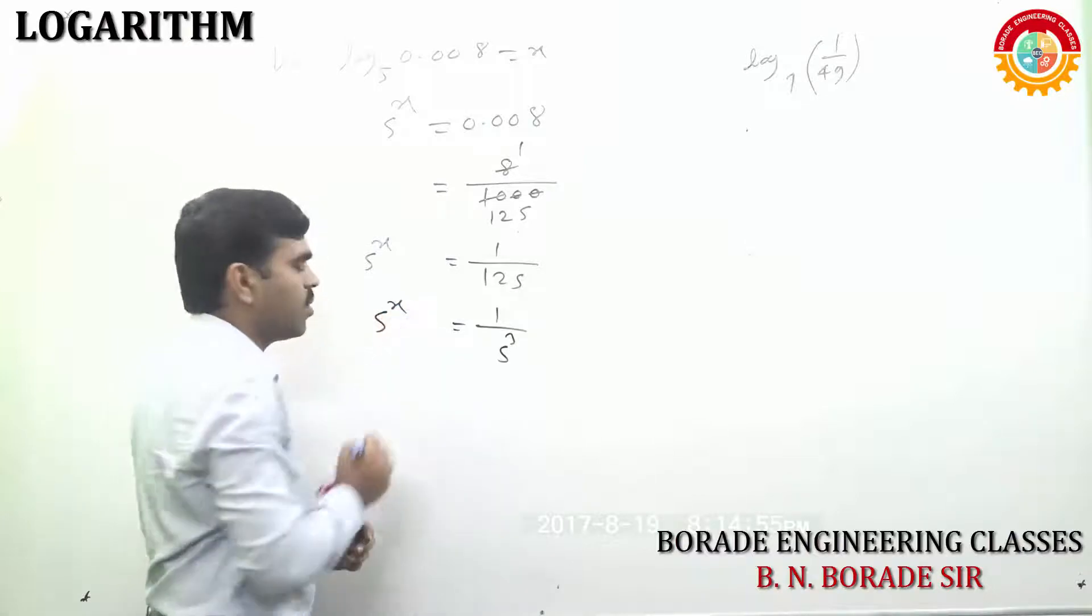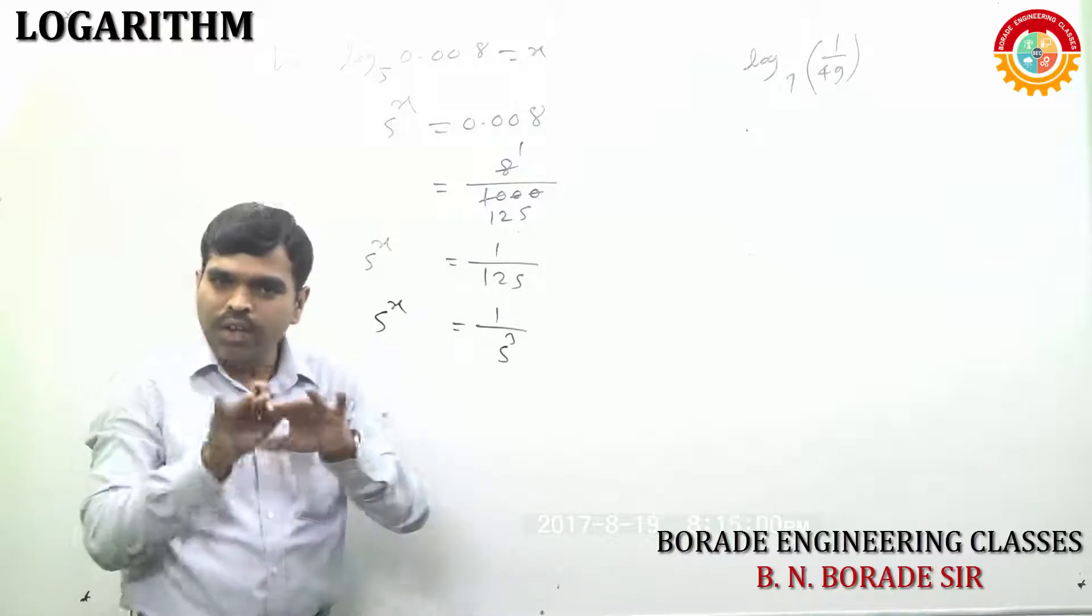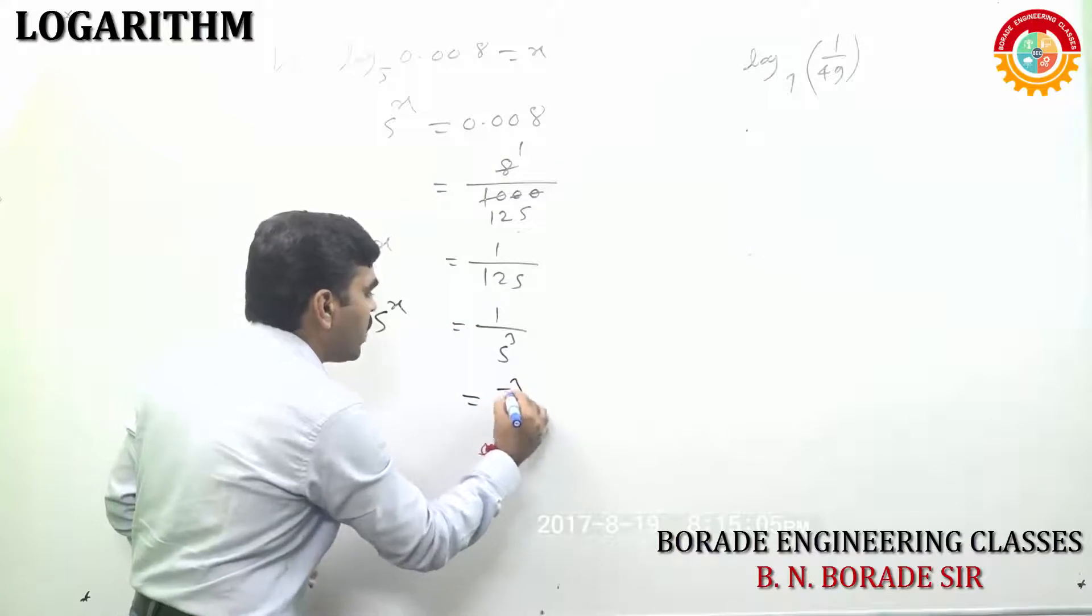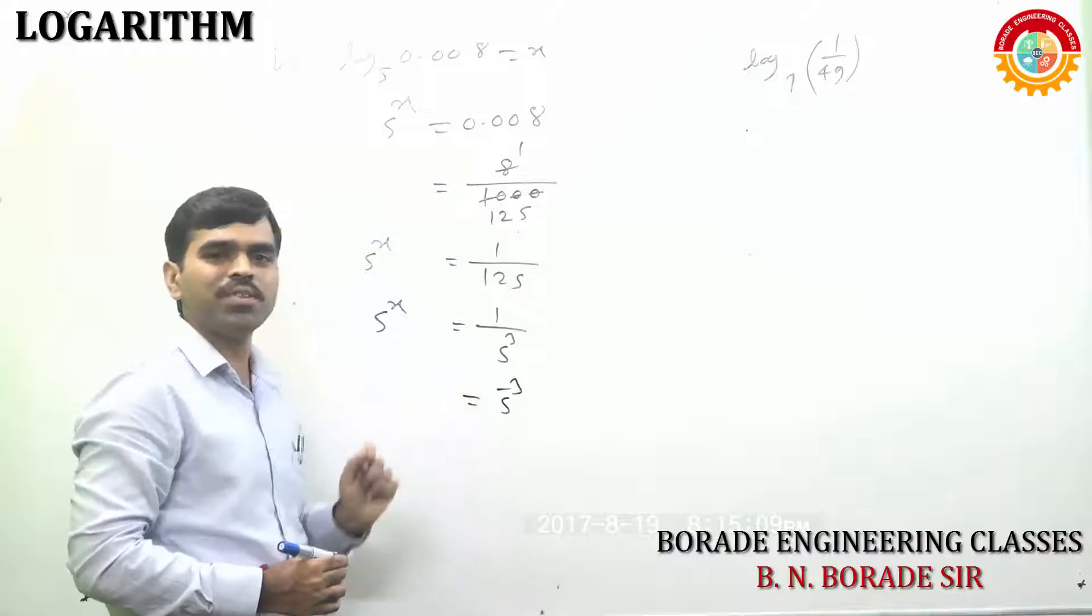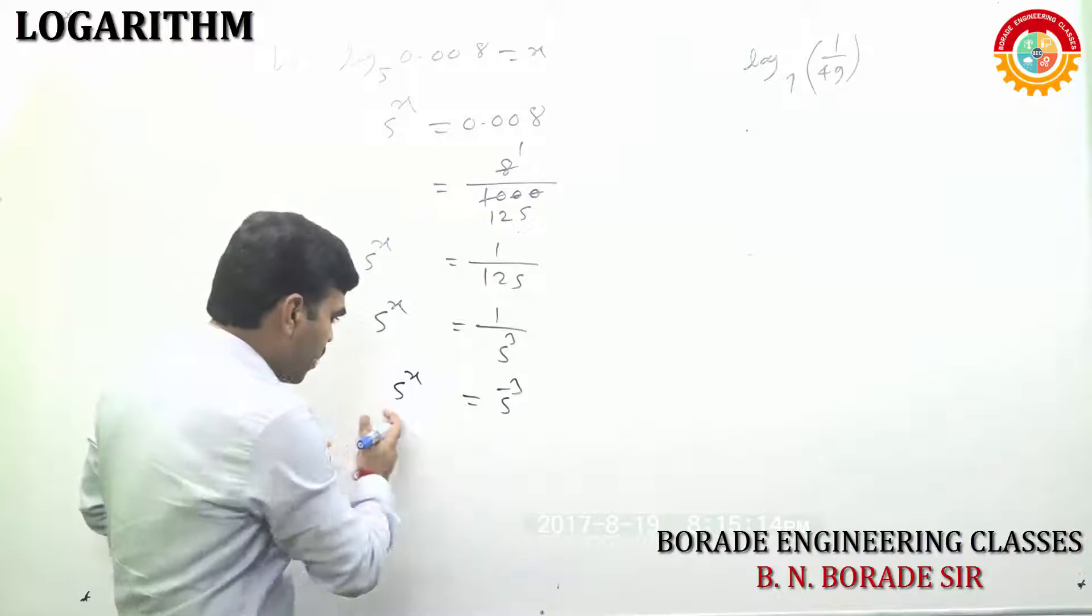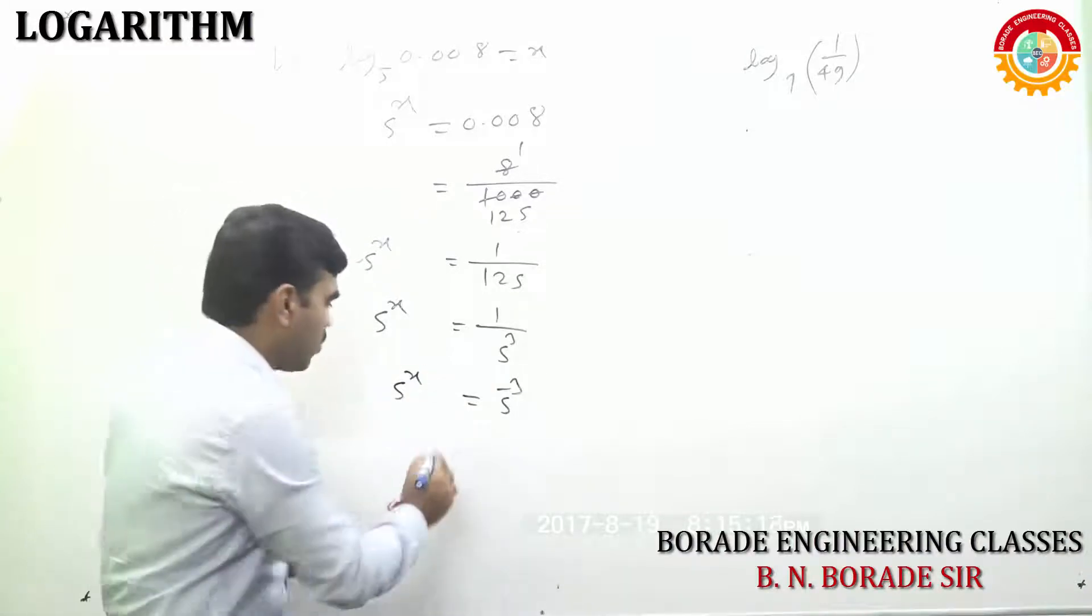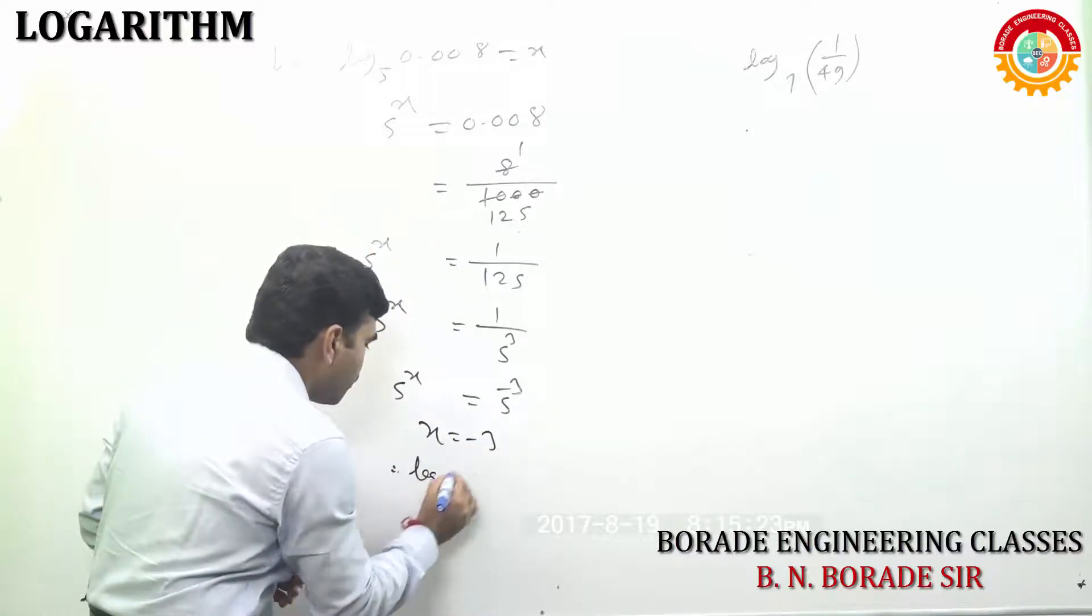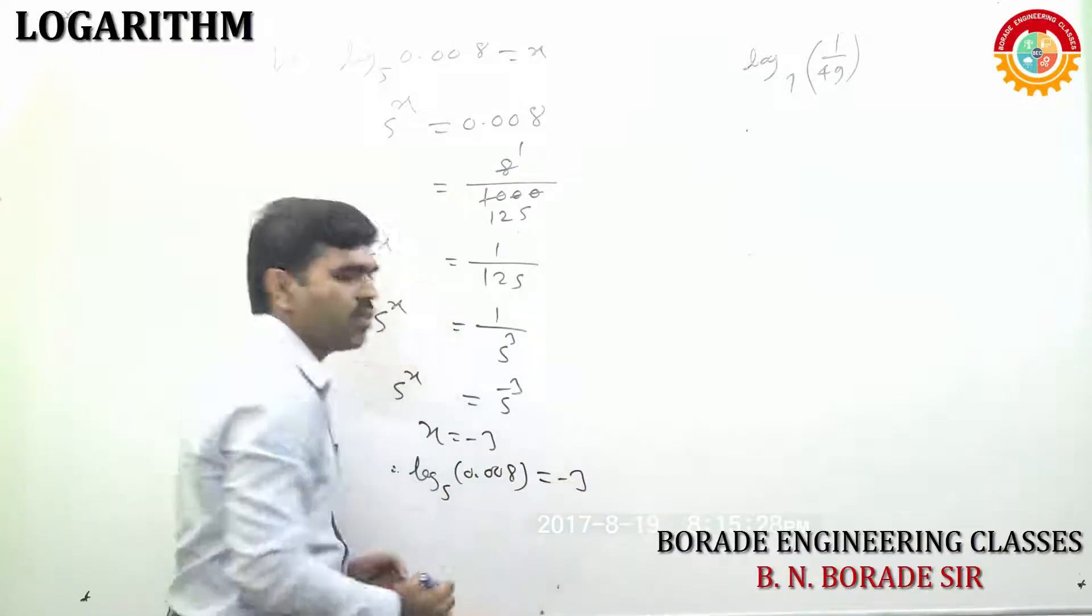And this is 5 raised to x. Can we compare this? Comparison karai jasal ta te equal level la paise. 1 upon 5 raised to 3 la paise. By the law of indices, we can write 1 upon 5 cube is 5 raised to minus 3. And this is 5 raised to x. We have base semi indices kasha stil equal. So, x equal to minus 3.